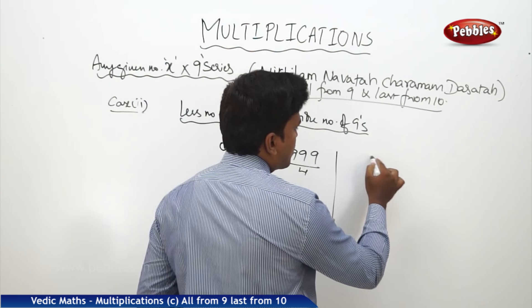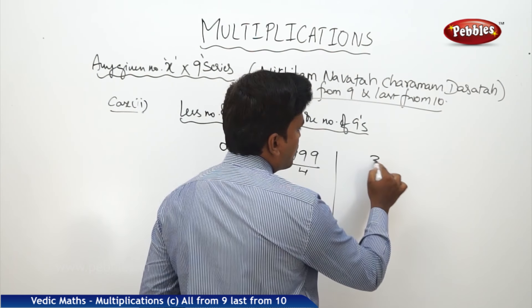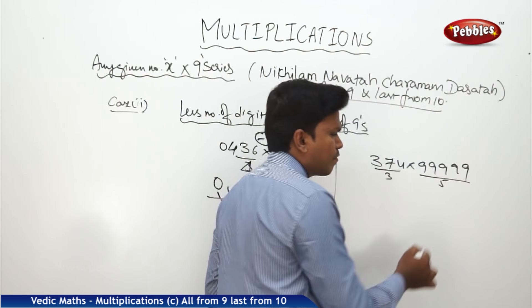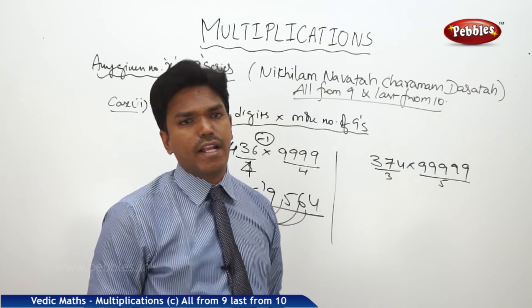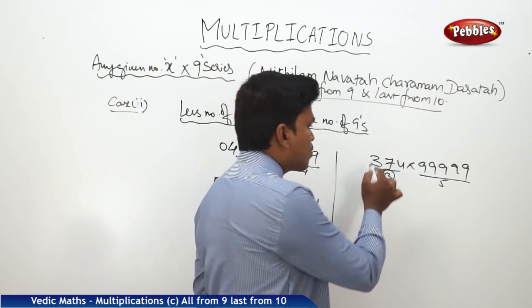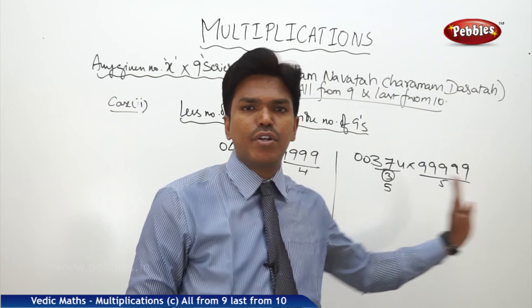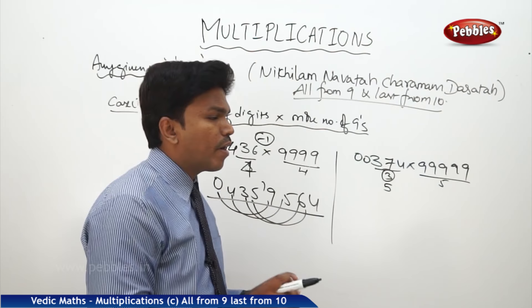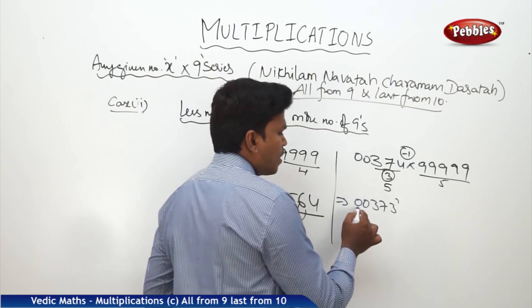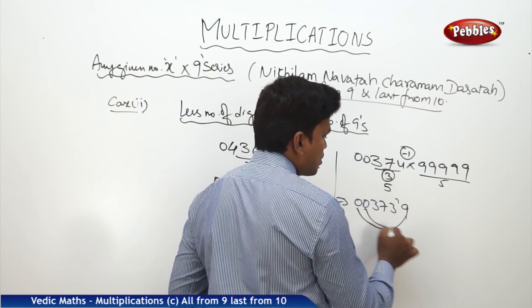Another example: 374 into 99999. There are 3 digits and 5 nines — 2 digits less. So add two zeros before the number: 00374. Now 5 digits into 5 nines. Subtract 1 to get 00373. Write the sequential 9's complements: for 0 it's 9, 0→9, 3→6, 7→2, 3→6. Answer: 00373|99626.